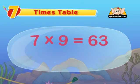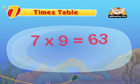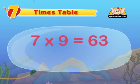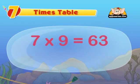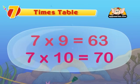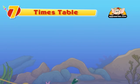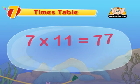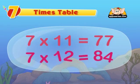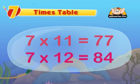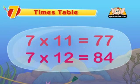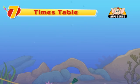7 into 9 is equal to 63. It's fun to sing along with me. 7 into 10 is equal to 70. 7 into 11 is equal to 77. 7 into 12 is equal to 84. And now you know a table more.